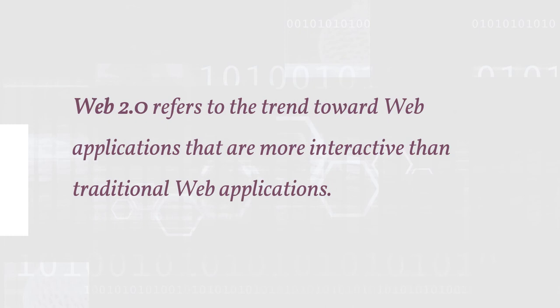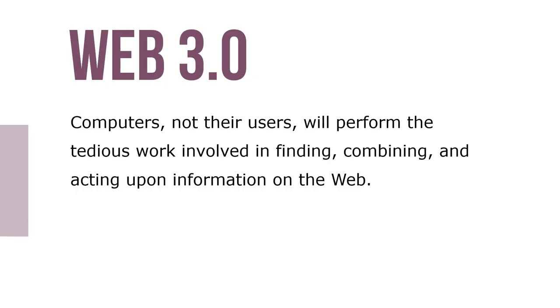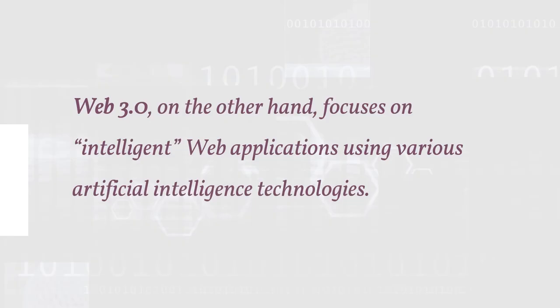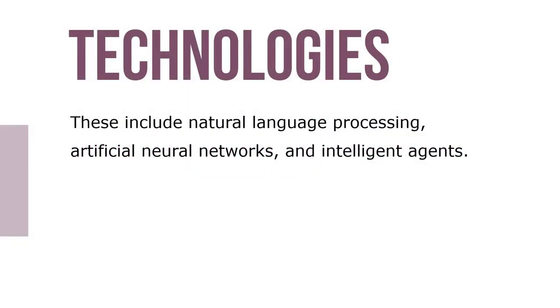Web 2.0 refers to the trend towards web applications that are more interactive than traditional web applications. Computers, not their users, will perform the tedious work involved in finding, combining, and acting upon information on the web. Web 3.0, on the other hand, focuses on intelligent web applications using various artificial intelligence technologies. These include natural language processing, artificial networks, and intelligent agents.